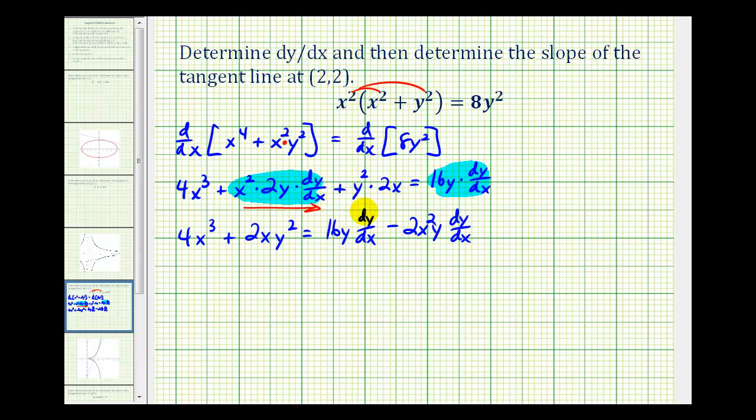So what we're going to do here is factor out dy/dx from these two terms. So we'll have dy/dx times the quantity (16y minus 2x squared y). And now because these are attached by multiplication, we can divide both sides by the quantity (16y minus 2x squared y). So we'll have solved for dy/dx. This simplifies to one. So we have dy/dx is equal to this quotient.